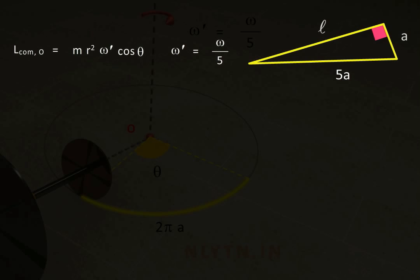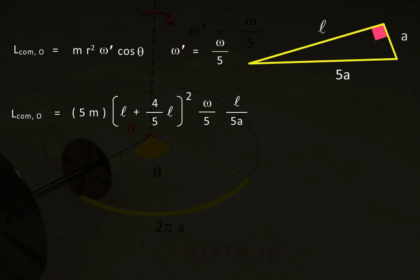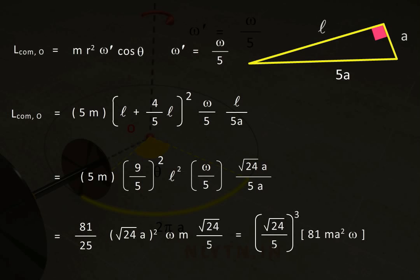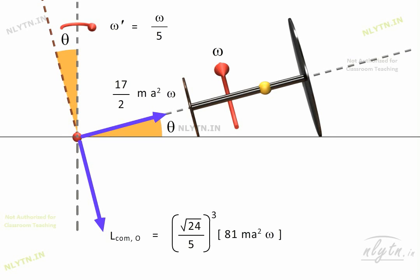The angular momentum of the center of mass with respect to point O will be equal to this term, and it will be along this axis. Now, to find the z-component of the angular momentum of the entire system with respect to point O, we can find the z-component of each of these vectors and then add them.